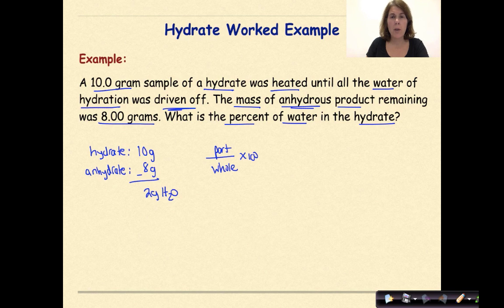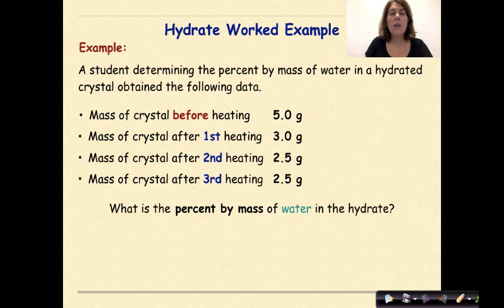So now we're going to plug in our numbers. They're asking for the percent of water. So 2 grams of H2O on the top, that's the part that's water, over the hydrate, which is 10 grams of hydrate, times 100, gives us 20%.